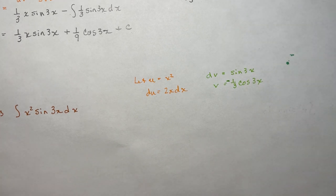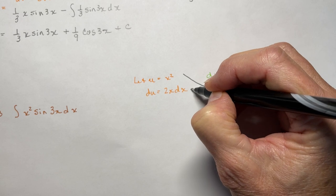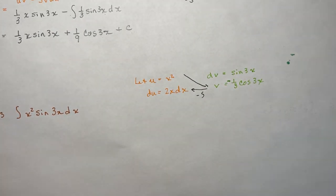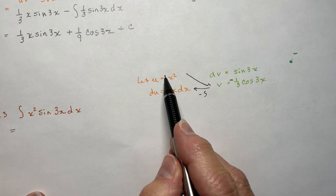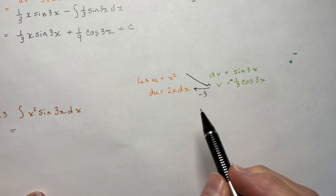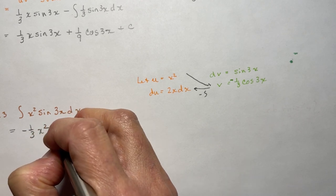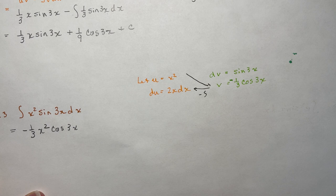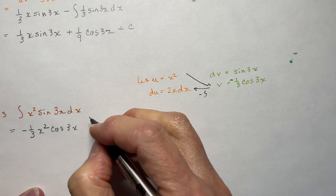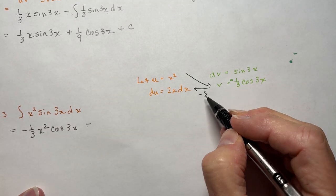So now I'm going to do my little pattern — going this way and this way — and that's going to be minus the integral. So this is going to be equal to u·v, so minus (1/3)x²·cos(3x).